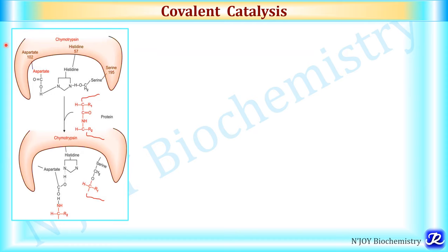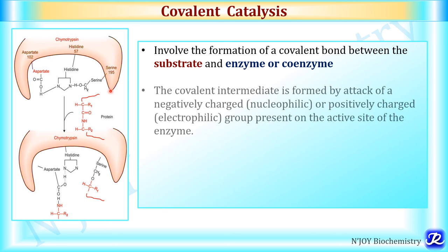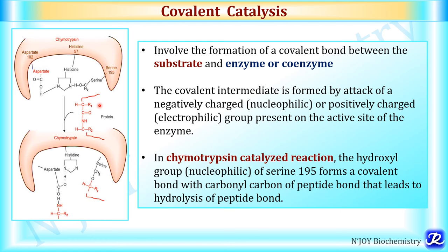The third mechanism of enzyme catalysis is covalent catalysis, which involves the formation of a covalent bond between the substrate and the enzyme or coenzyme. A covalent intermediate is formed by the attack of a nucleophilic (negatively charged) or electrophilic (positively charged) group present on the active site of the enzyme. In the chymotrypsin-catalyzed reaction, the hydroxyl group of serine 195 forms a covalent bond with the carbonyl carbon of the peptide bond, leading to hydrolysis of the peptide bond.